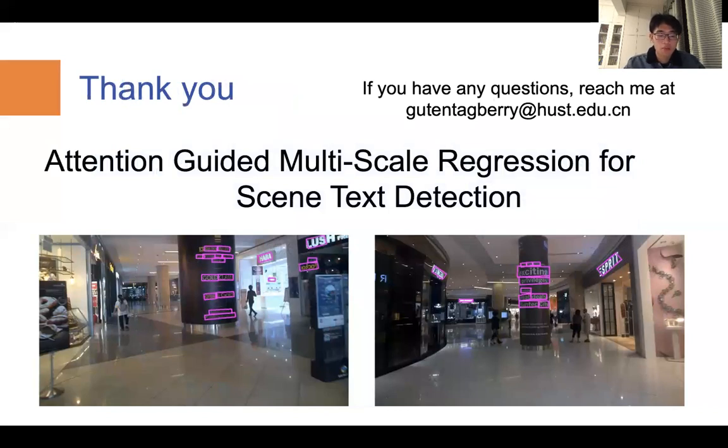In conclusion, I propose a novel effective scene text detector. The application of multiscale structure effectively boosts its ability to extract features from natural scenes. In addition, the introduction of attention mechanism further refines the ability of the detector to distinguish between text regions and background. Thank you for your listening and if you have any questions, please leave in the comments or send me an email. That's all for my paper, Attention Guided Multiscale Regression for Scene Text Detection. Thank you.